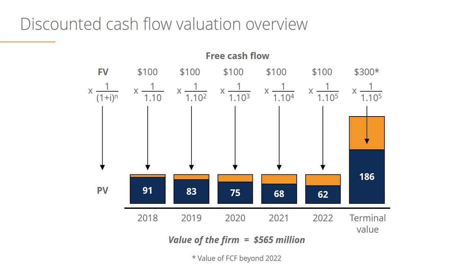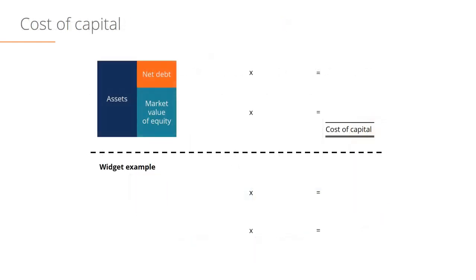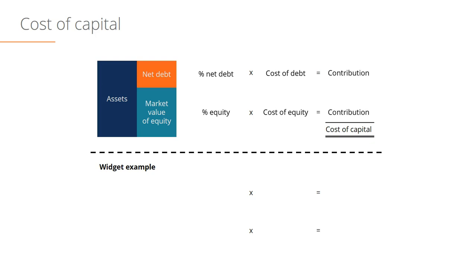Now let's take a look at the cost of capital formula. The cost of capital depends on the capital structure of a business and its level of risk. A company consists of assets — the base of the business — but then it has a capital structure made up of debt and equity. We have to take into consideration the percentage of the company's capital that's debt and the percentage that's equity, multiply each by their respective costs, and the sum gives us the total cost of capital.